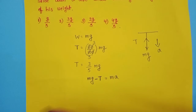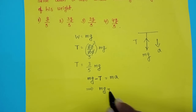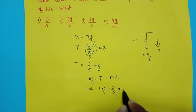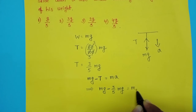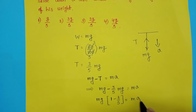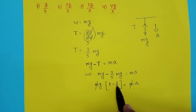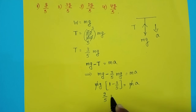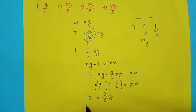mg minus T equals ma. Substituting T as 3 by 5 mg: mg minus 3 by 5 mg equals ma. Taking mg common: 1 minus 3 by 5 equals ma divided by g. Mass gets cancelled. 1 minus 3 by 5 equals 2 by 5. So 2 by 5 times g equals the acceleration of the person.